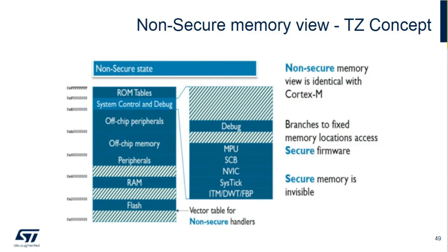This is what the memory map looks like from the non-secure side. Any access to secure memory or a peripheral will trigger a security exception, which is a new exception handler to the L5. Code that is executed from a non-secure region is executed in a non-secure state and can only access the non-secure memory region.